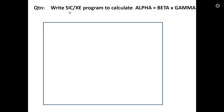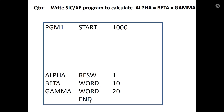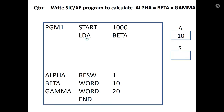Next is the equivalent SIC XE program. It has a start instruction and end instruction, with the same variables alpha, beta, and gamma. The first instruction is LDA beta, loading accumulator with 10. SIC XE has extra registers, so we will use register S. Then LDS gamma — S is loaded with gamma value 20.